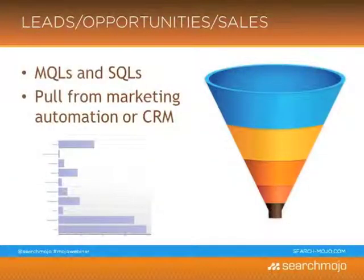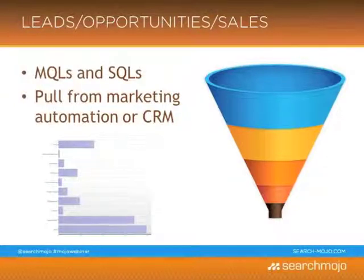The other thing you need to think about is measuring leads, opportunities, and sales. At Search Marjo, we have really two levels of leads — this is something to think about when we talk about goals versus leads. One of our goals is a lead, but it may not always be. We have things called marketing qualified leads and sales qualified leads.